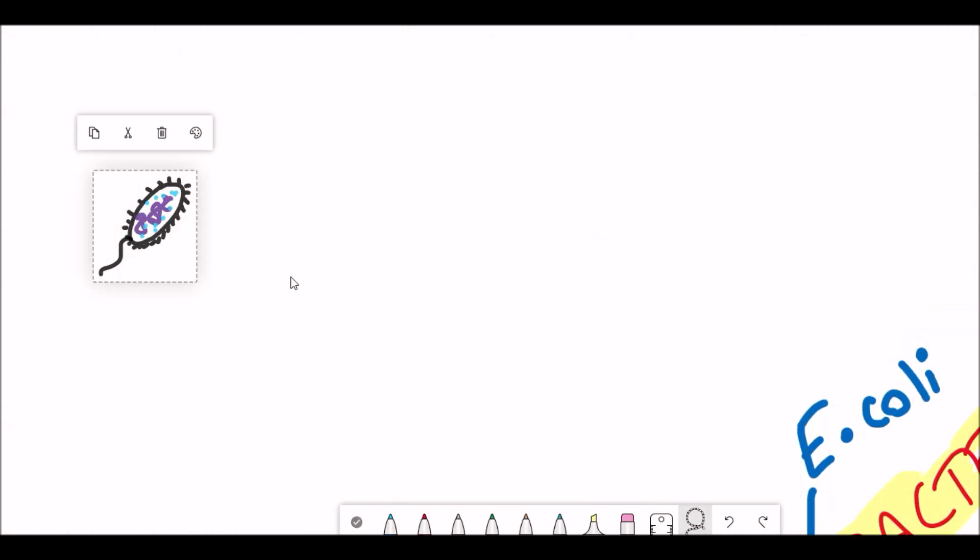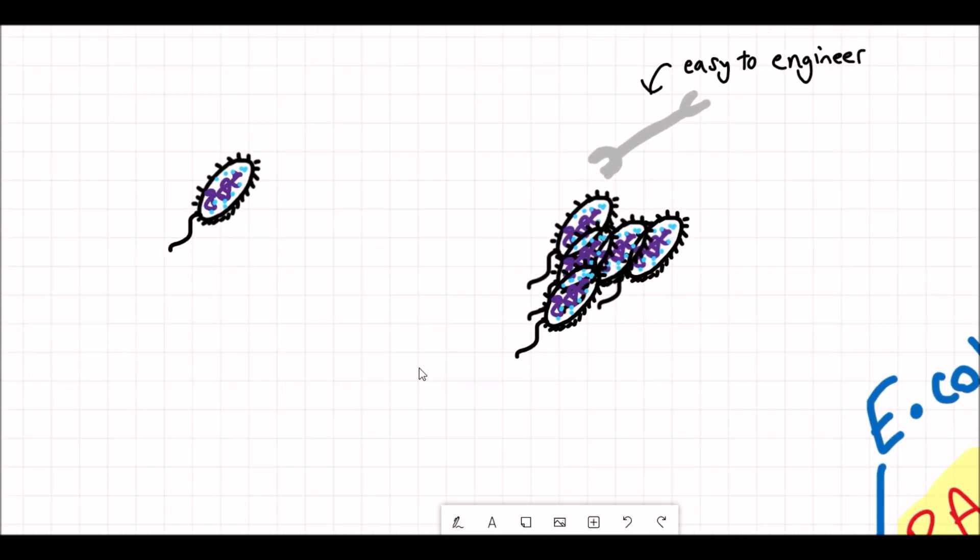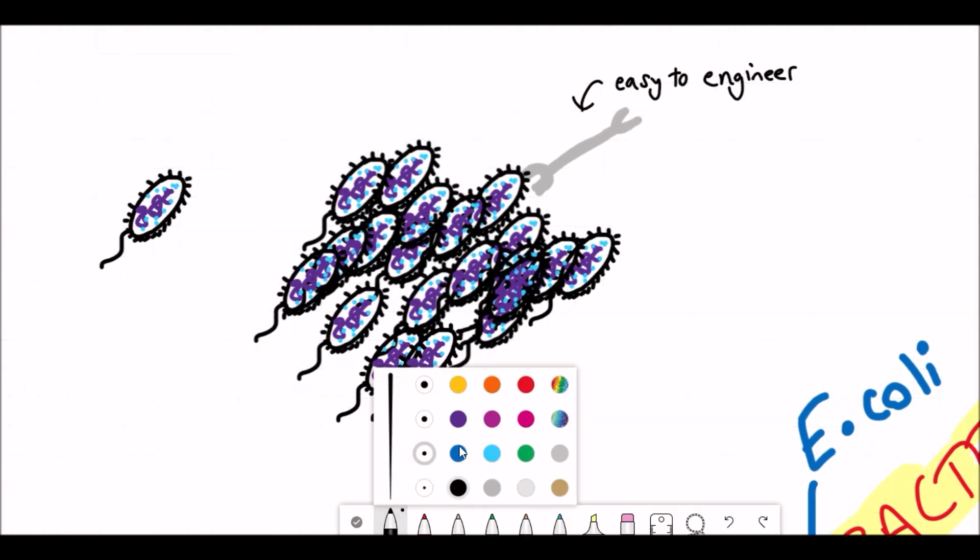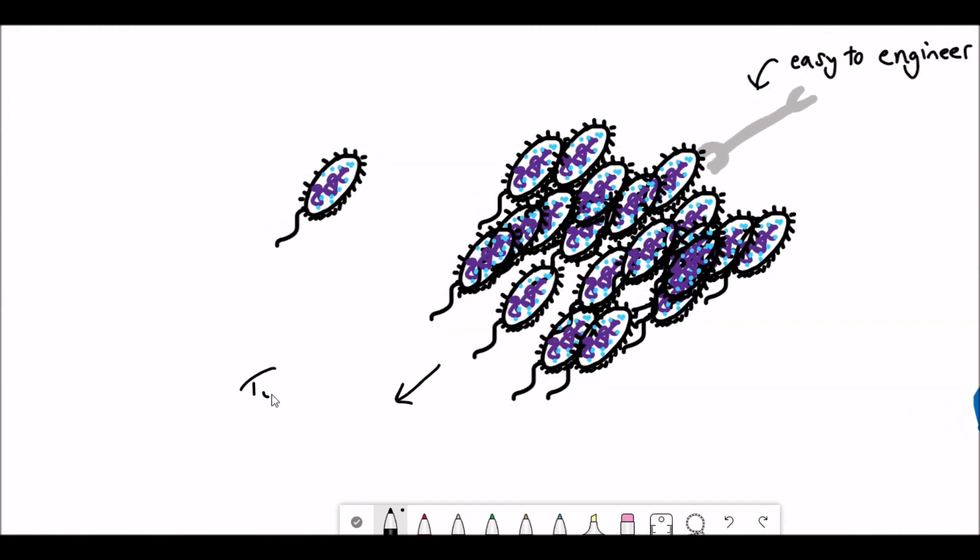So to understand why they did it, we need to firstly discuss why they chose E. coli. E. coli as a bacterium is very easy to engineer and as you can see here it grows very rapidly. But to be able to grow, bacteria need energy. Where do they get this energy from?